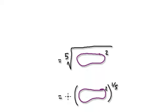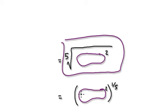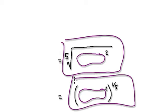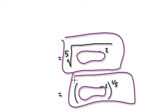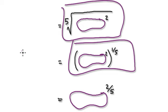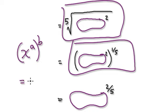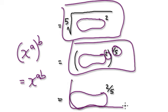Now once you're here, this is the same as this. And from the section on indices, whenever you have x to the power of a and then to the power of b, that's the same as x to the power of a times b. So you can get this multiplied by this to give you this.